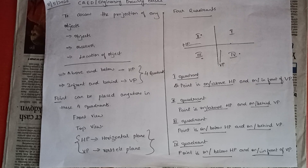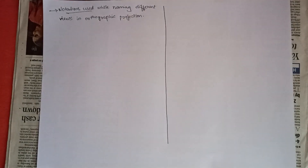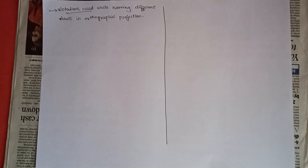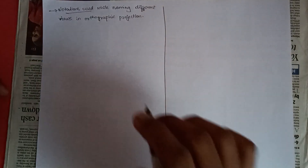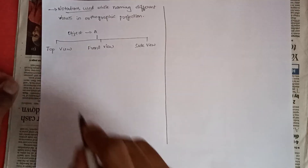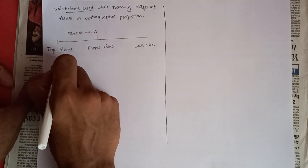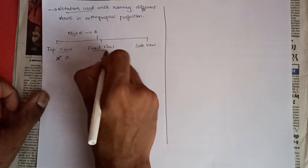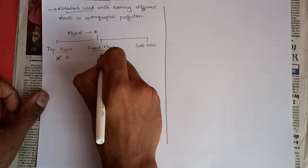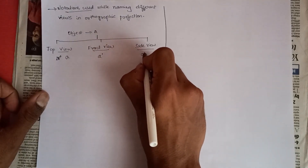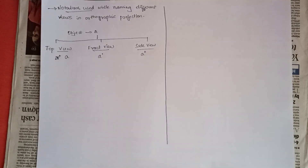I hope you guys were with me till now. Drop a like if you've made it this far, and subscribe to the channel. Now let's look at the notations used while naming different views in orthographic projections — you should remember these and follow them in all your problems. Consider an object named A: the top view is denoted by small 'a', the front view by small 'a' with a single dash, and the side view by small 'a' with a double dash.